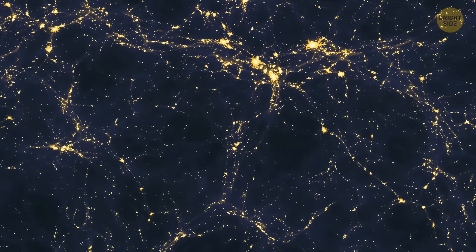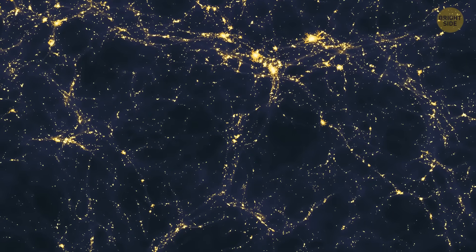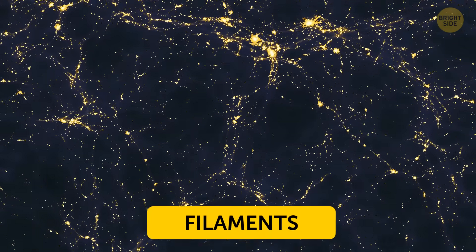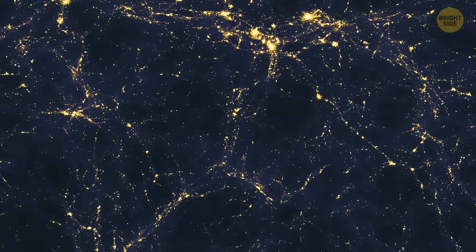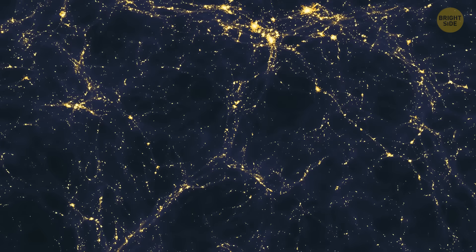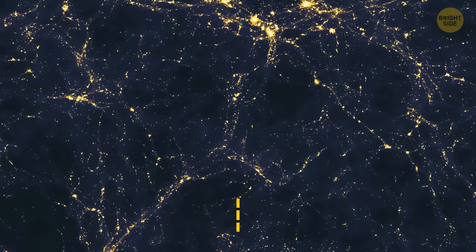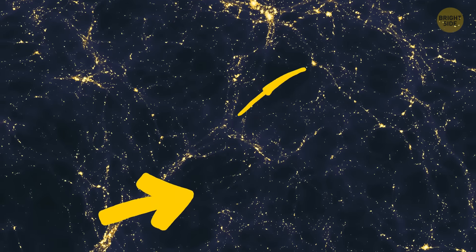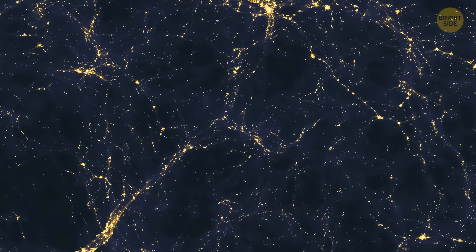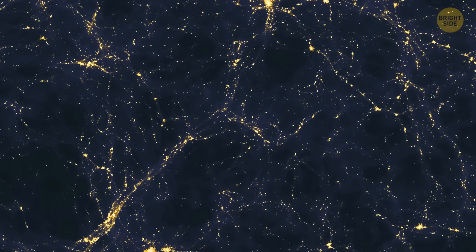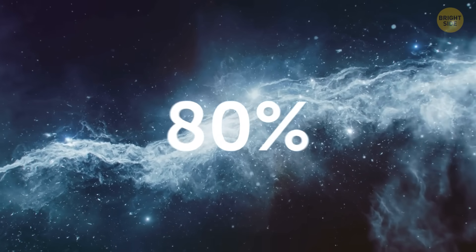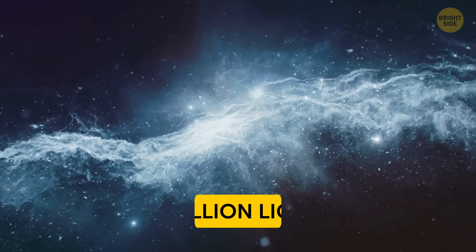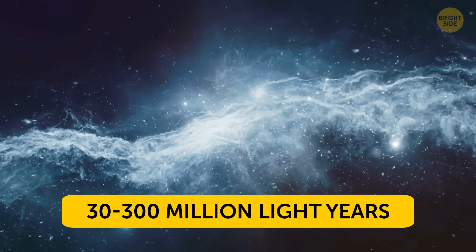You see, galaxies look like a giant web. Most of them are parts of long structures called filaments. Those wind through the cosmos, and when they meet, they form regions with a high concentration of galaxies. These regions are what we know as galaxy clusters. But between these clusters and threads, there are huge, empty voids that hardly contain any galaxies. Such voids make up almost 80% of the observable universe. And most of them are huge – from 30 to 300 million light-years wide.